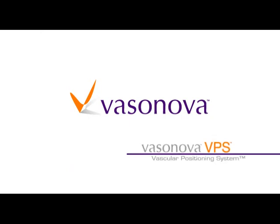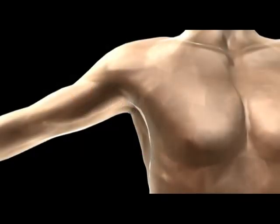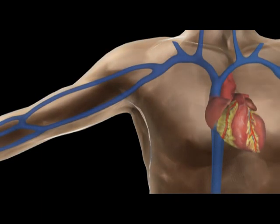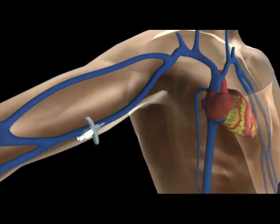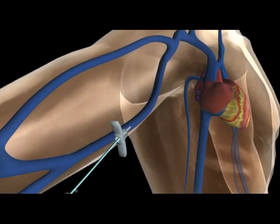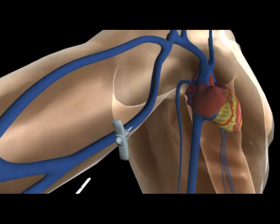The Vasonova VPS Vascular Positioning System is an innovative vascular navigation system with an initial application for accurately and precisely placing peripherally inserted central catheters, or PICC lines. Currently, PICC lines are positioned without a guidance system or with external guidance systems that don't accurately reflect the patient's internal physiology.